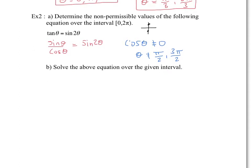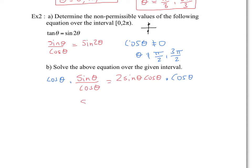Now part B asks us to solve the equation over the given interval. Notice that this will be the first step because we have theta and 2 theta — you want to have the same angle. So we're probably going to have to change sine 2 theta into 2 sine theta cos theta. So the left-hand side is sine theta over cos theta, which is tan theta. And on the right-hand side, we're going to use the double angle identity. We multiply both sides by cos theta to get rid of the denominator, and we're left with sine theta equals 2 sine theta cos squared theta, because cos times cos gives cos squared, and the cos thetas on the left cancel out.